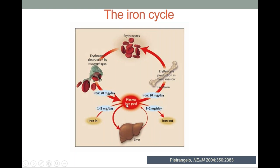Iron from the plasma iron pool is stored in the liver. Transferrin is the transport form of iron and erythrocyte production takes place in the bone marrow. Additional iron must be available for maximum proliferation of erythroid marrow response. With markedly stimulated erythropoiesis, demands for iron increase 6 to 8 fold.